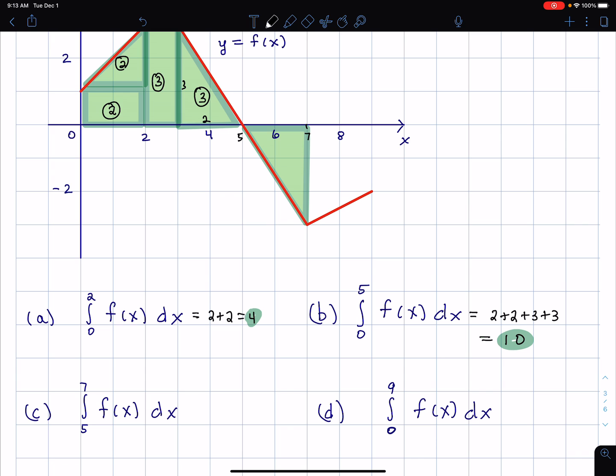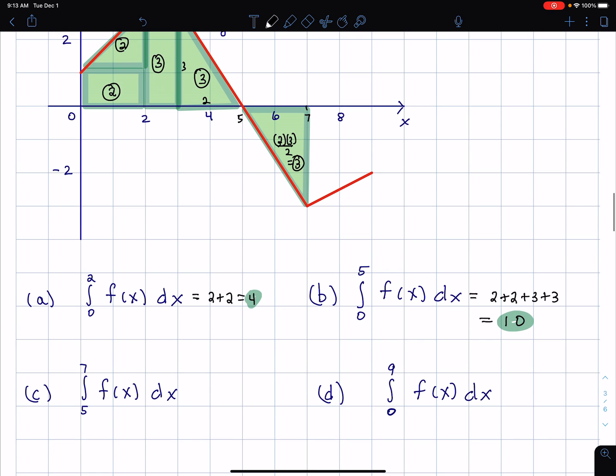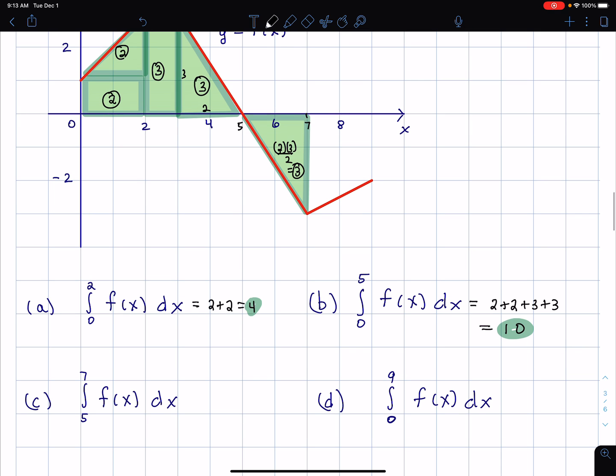We have base times height divided by 2 because it's a triangle. So we have 2 times 3 divided by 2, which equals 3. You could try to count rectangles, but that might not be so clear. So the area is 3. How do we interpret the integral from 5 to 7?